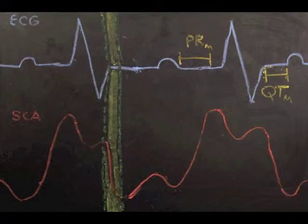The PR segment is the approximate time required for the electrical signal to spread from the atria down the bundle of His to the ventricle. The QT segment is the approximate time of the calcium plateau in the ventricular contractile fibers.